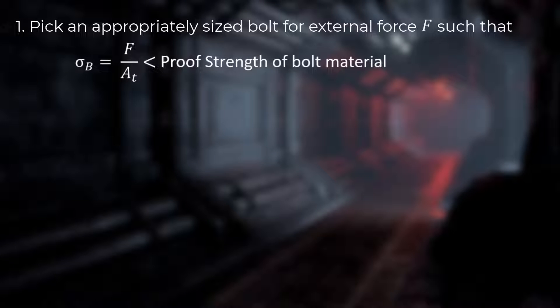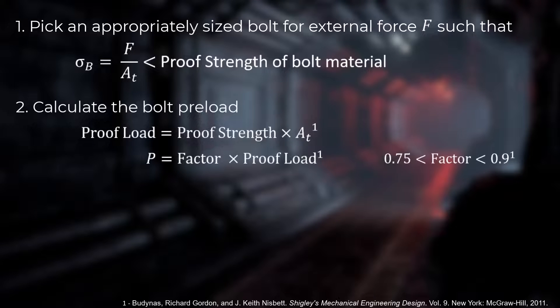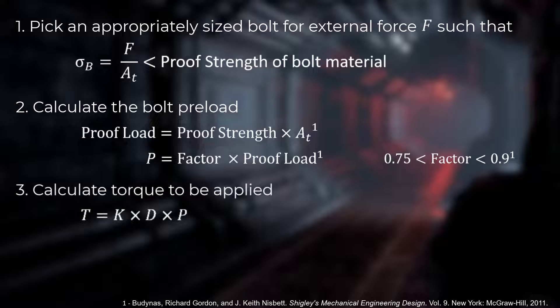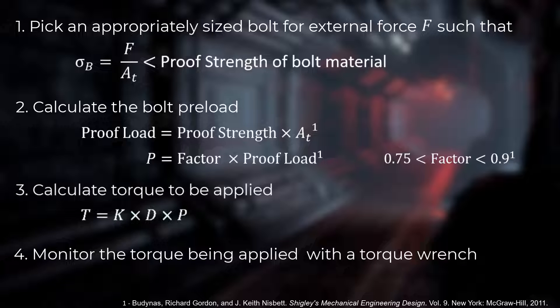In a practical case, we first pick an appropriately sized bolt based on the external force acting on the joint during machine operation. Then we calculate the proof load for this bolt and use it to calculate the bolt preload. This calculated value is used to find the corresponding torque to be applied on the bolt head. While tightening the bolts, the torque applied is monitored using a torque wrench to ensure that the calculated value of torque is applied.